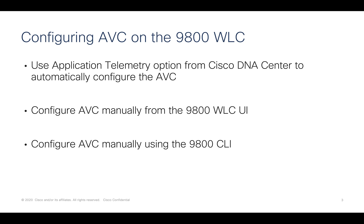There are three ways you can configure AVC on the 9800 controller. You can use the application telemetry option from Cisco DNA Center to configure it automatically on the 9800 controller — for this you need to provision the 9800 controller and access points from the DNA Center. If it's a brownfield setup where the SSIDs are already configured on the 9800 controller, you can turn AVC on from the 9800 UI or from the 9800 CLI, configuring NetFlow and pointing it to Cisco DNA Center as the collector.